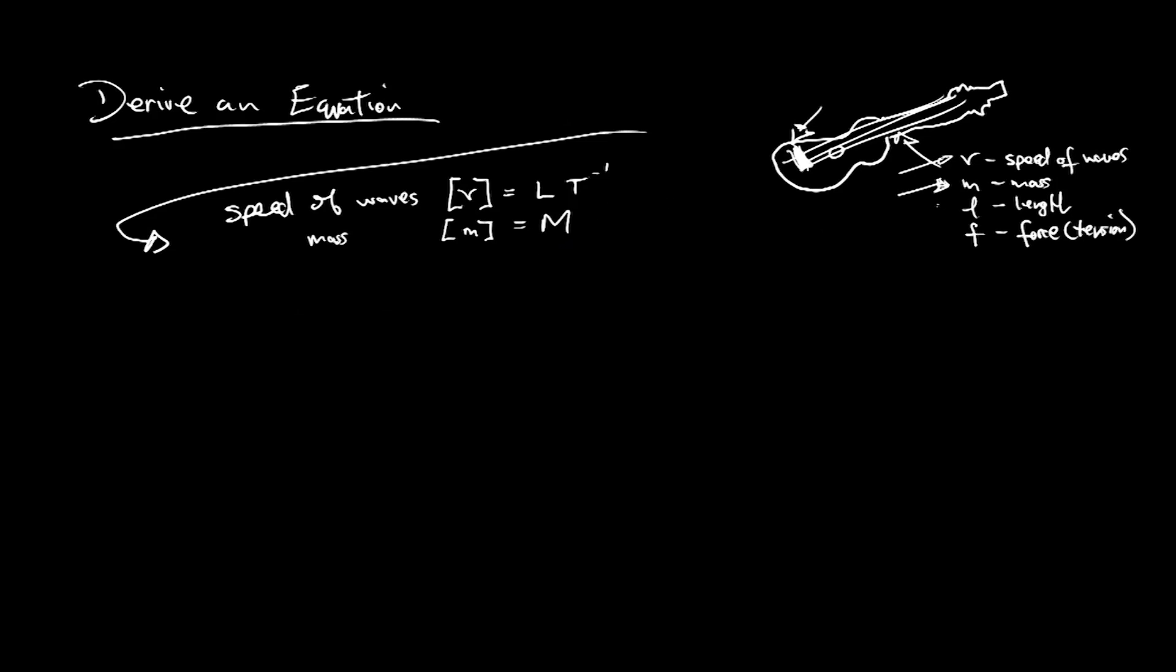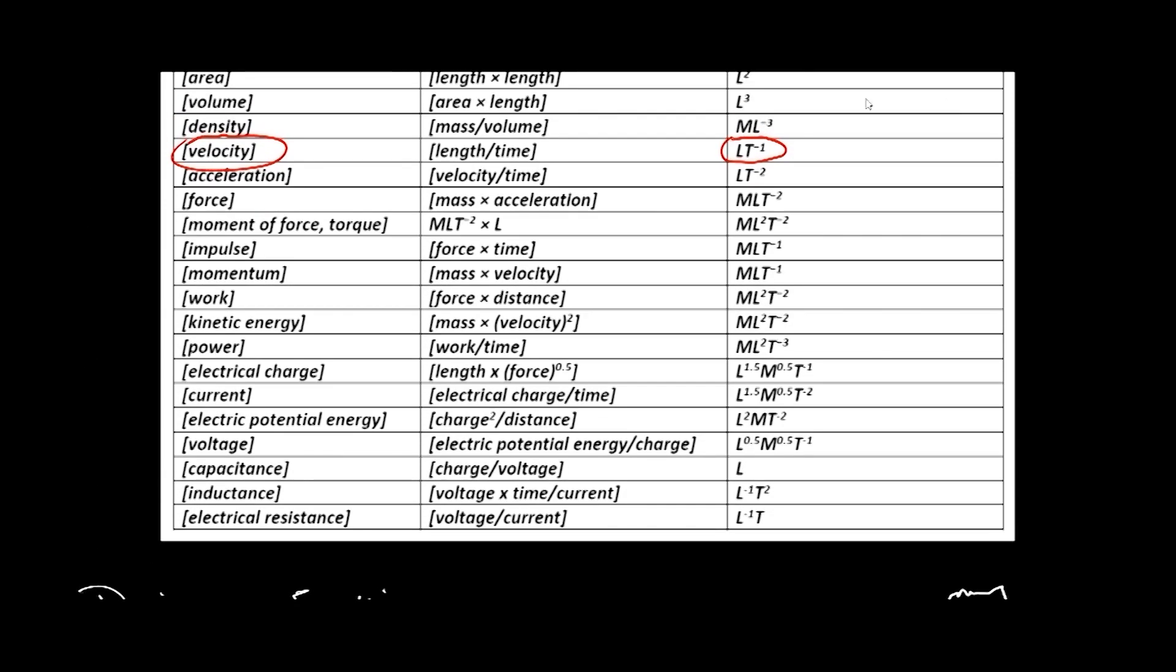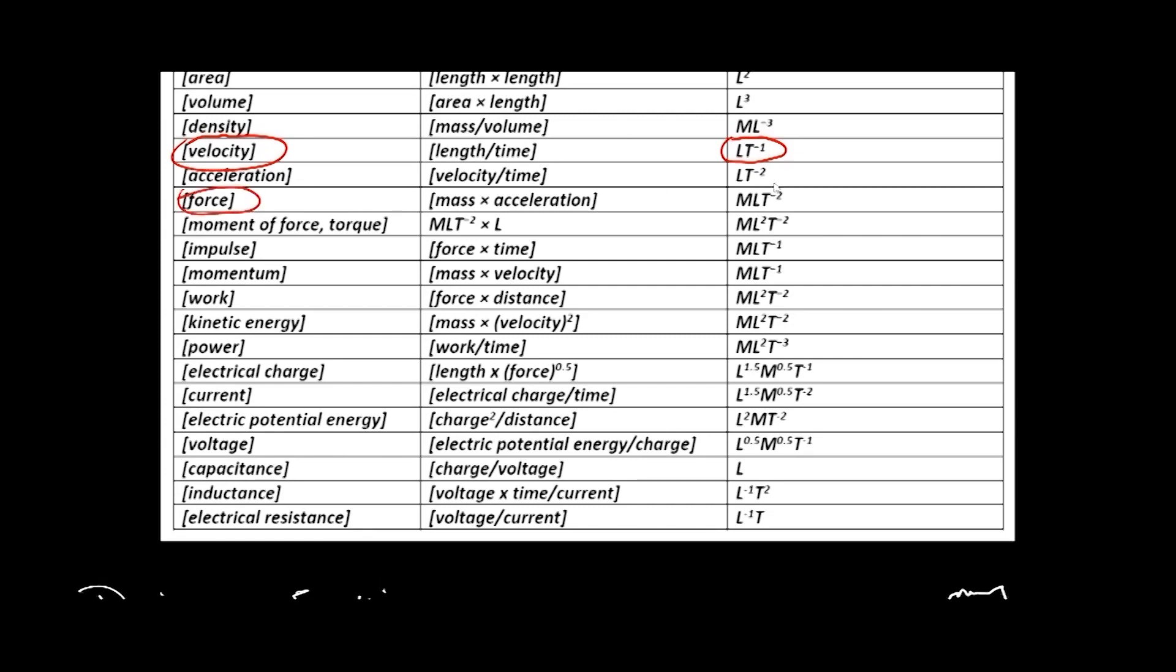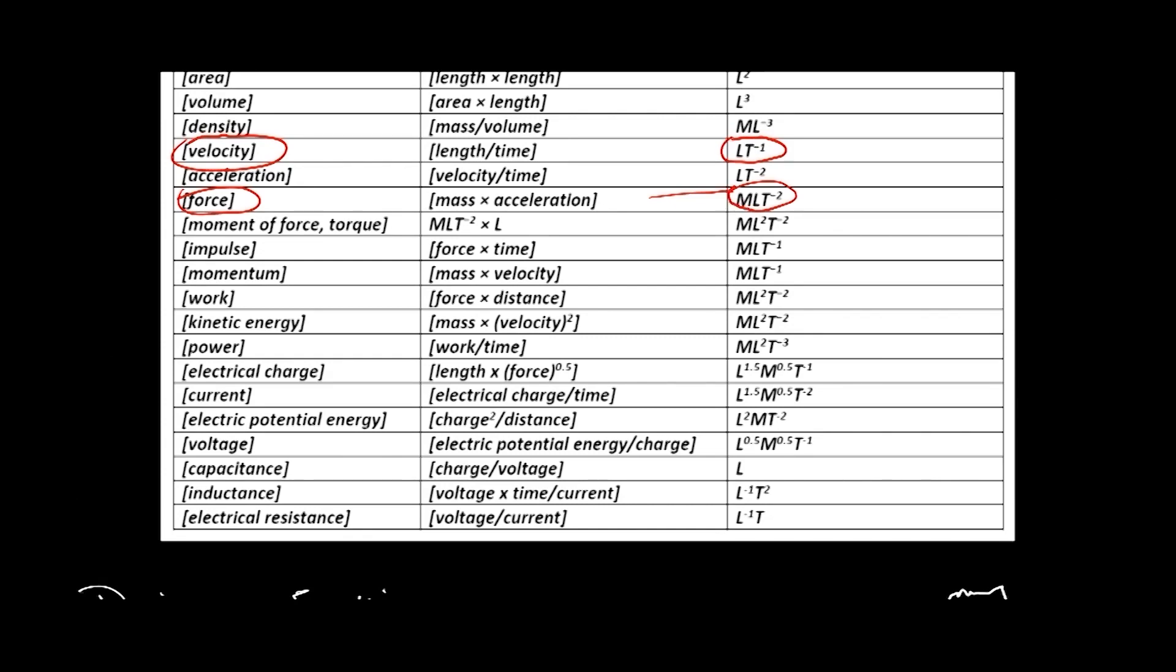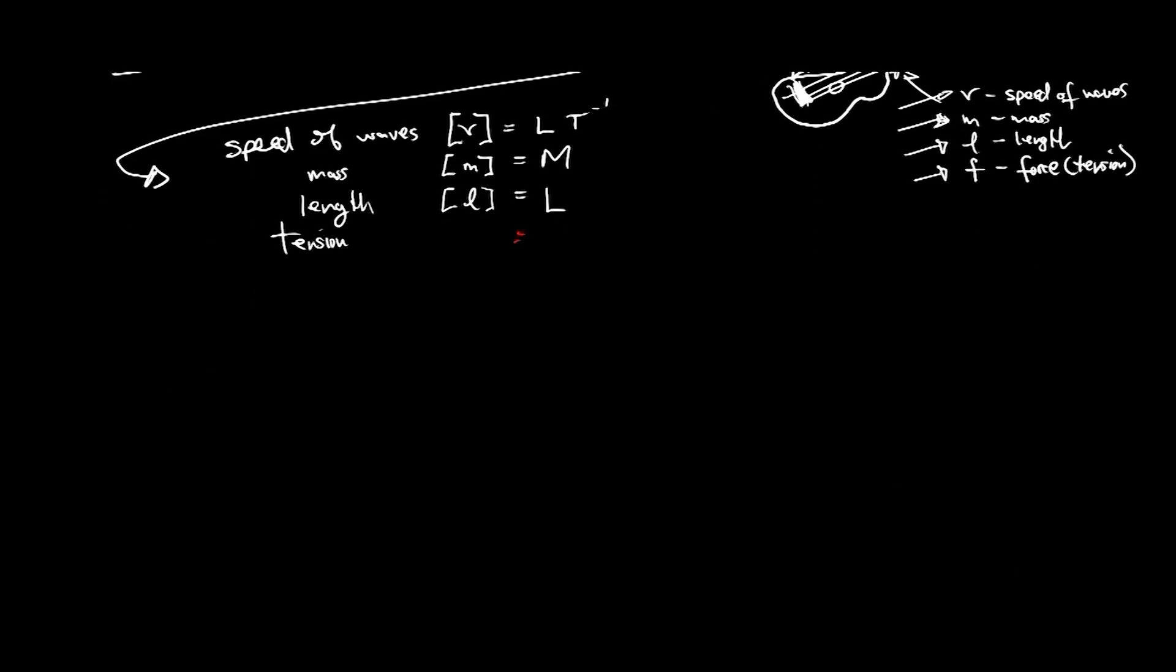String length. The length of the string. I just call it length. So the dimensions of length L. Well length is just length. So we just use L. Nice simple one. The tension in the string is the next one we'd maybe want to look at. So that's a force, of course. There's a force applied to the string. In this case it's a tension. So it's been stretched. And we look for dimensions of force. We can see that here. So over there, there is M L T to the minus two. We're going to call it force F.